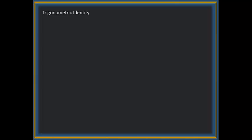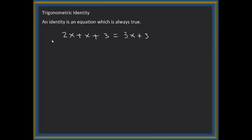In this section on trigonometric identities, we will identify what an identity is and its definition. An identity is an equation which is always true. For example, the algebraic equation 2x + x + 3 = 3x + 3 is always true for all values of x.